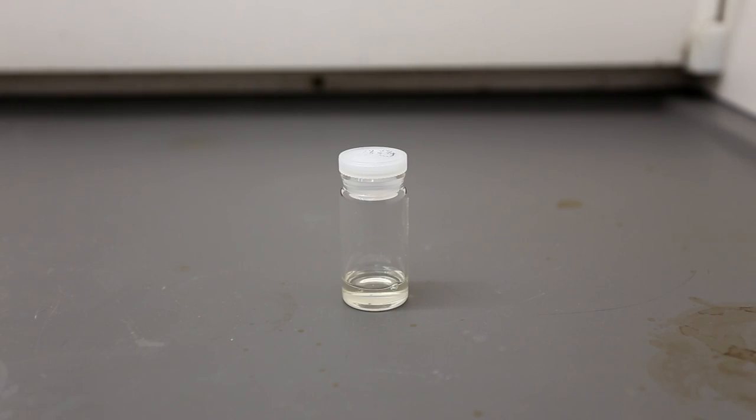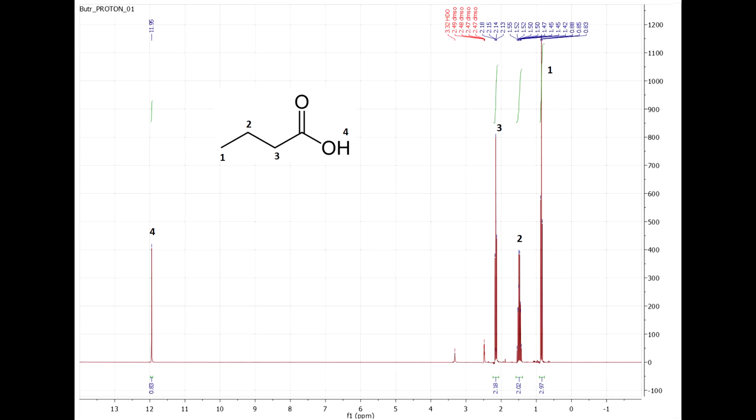The final yield was 3.75 milliliters of butyric acid which represents a yield of about 60%. A distillation can be carried out to further purify the butyric acid and to remove the slight yellow tinge. This is the final and quite clean proton NMR of the butyric acid.